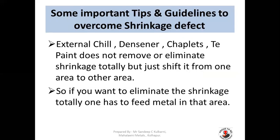Some important tips: external chills, densers, chaplets, or zircon paint — whatever you are using — do not remove or eliminate shrinkage totally, but just shift it from one area to another. So if you want to eliminate the shrinkage totally, you have to feed metal in that area. These are temporary solutions; they will not eliminate the shrinkage defect. To eliminate shrinkage you must feed metal at that particular area.